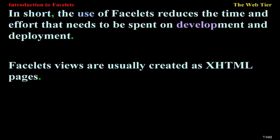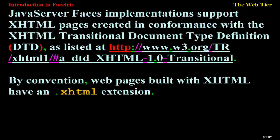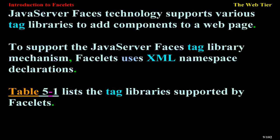Facelets features include use of XHTML for creating webpages, support for Facelets tag libraries in addition to JavaServer Faces and JSTL tag library support, and support for the expression language (EL), as well as templating for components and pages. Facelets views are usually created as XHTML pages. JavaServer Faces implementations support XHTML pages created in conformance with the XHTML transitional DTD. By convention, webpages built with XHTML have an XHTML extension. Facelets uses XHTML namespace declarations to support the JavaServer Faces tag library mechanism.